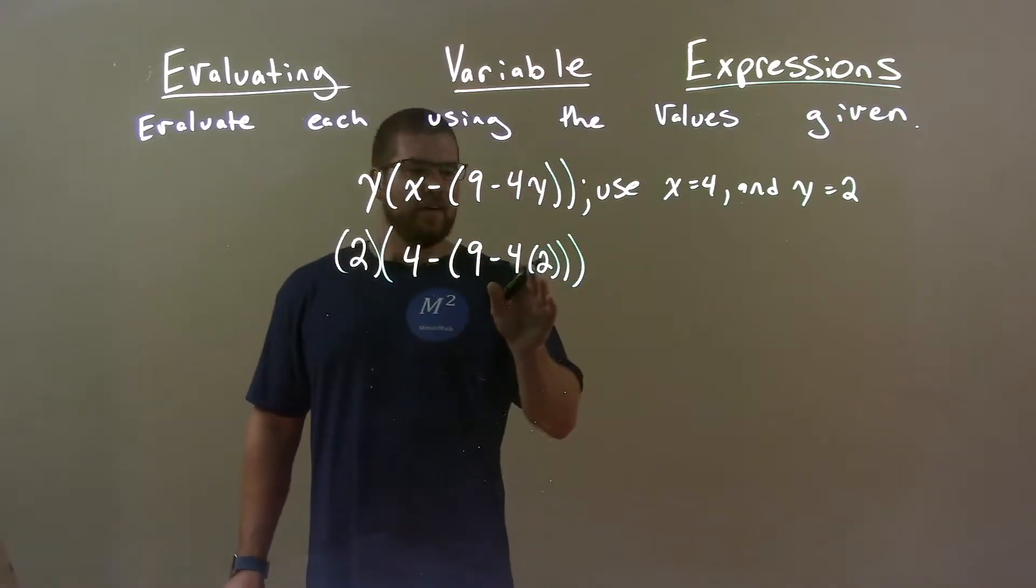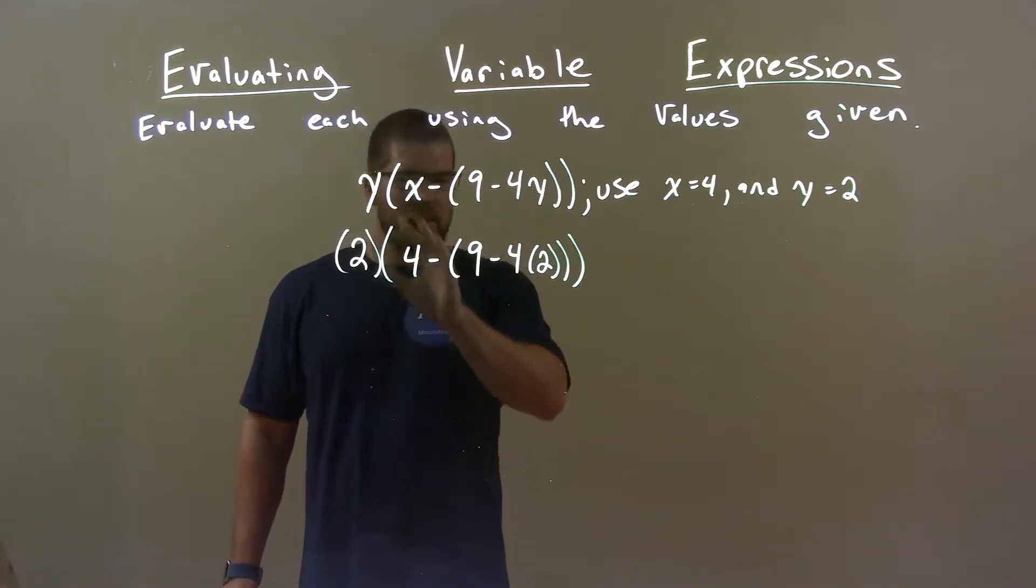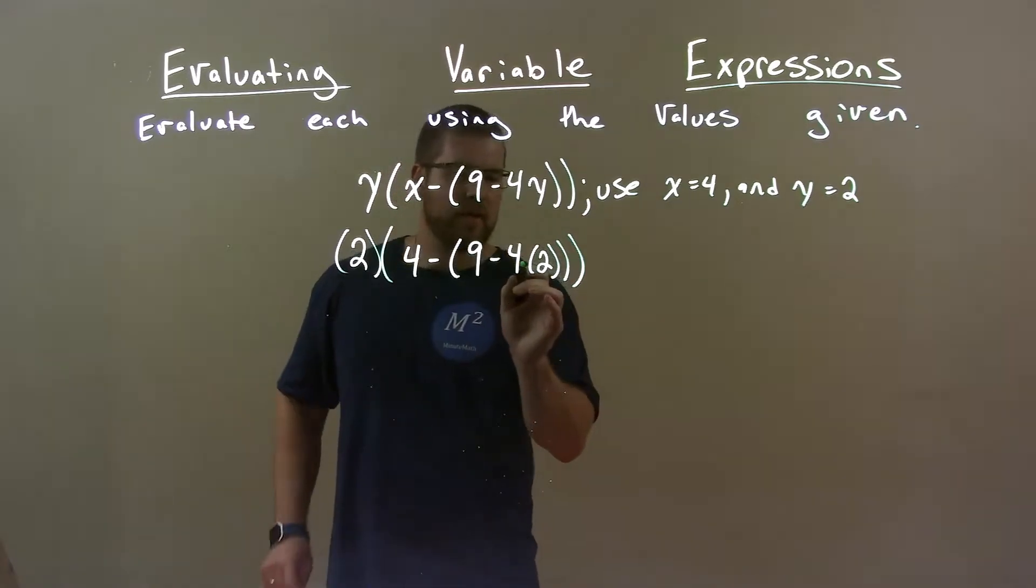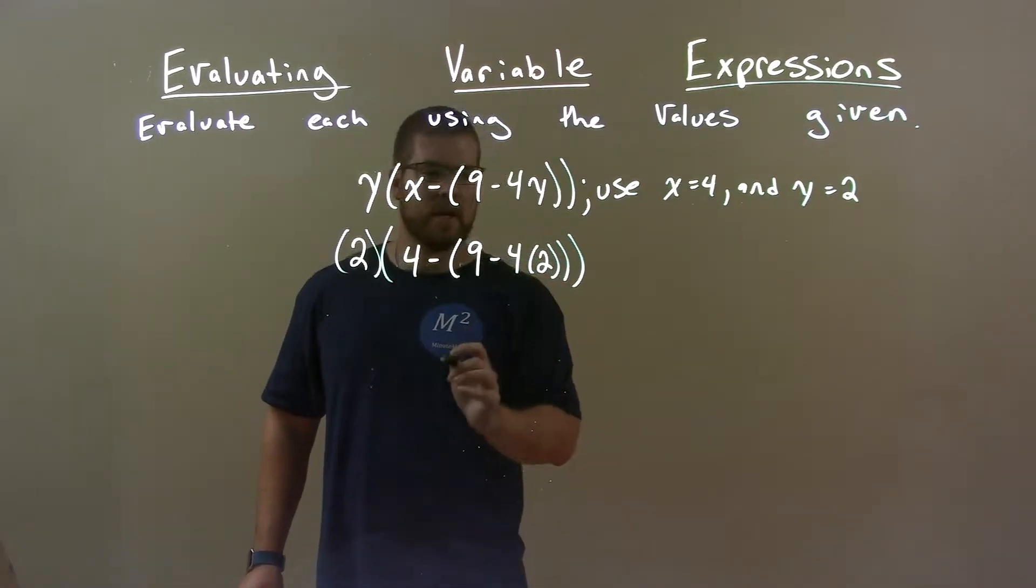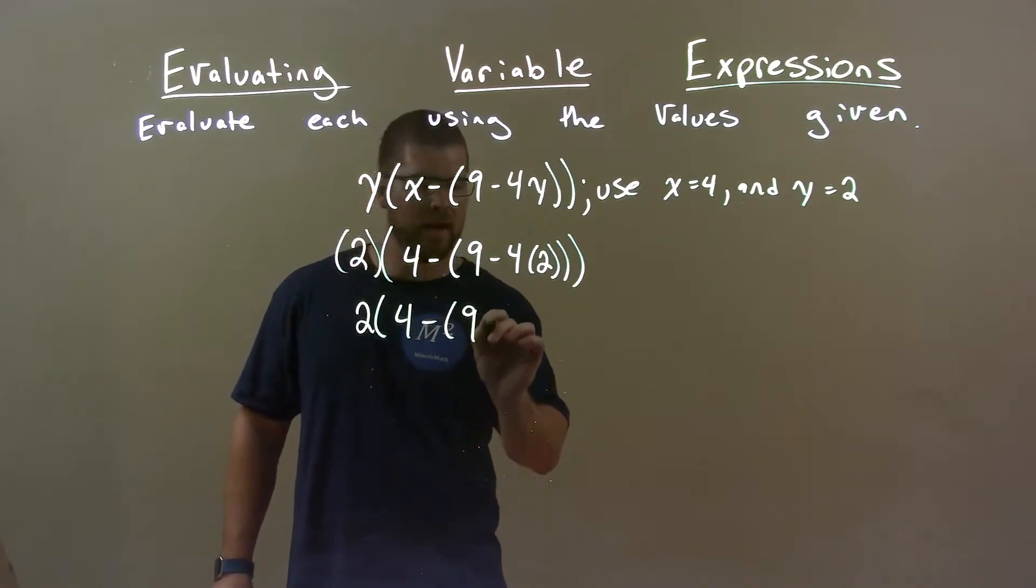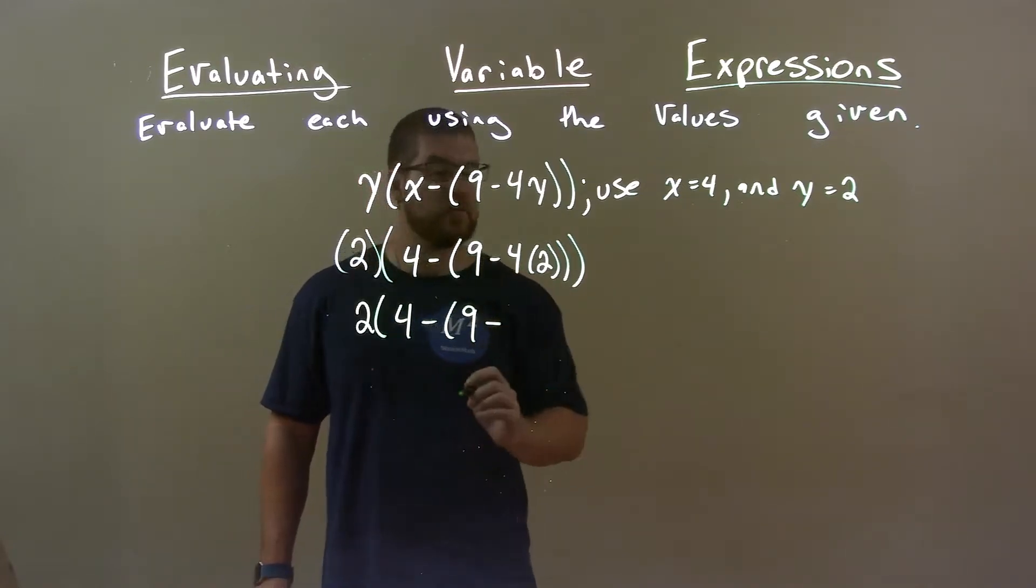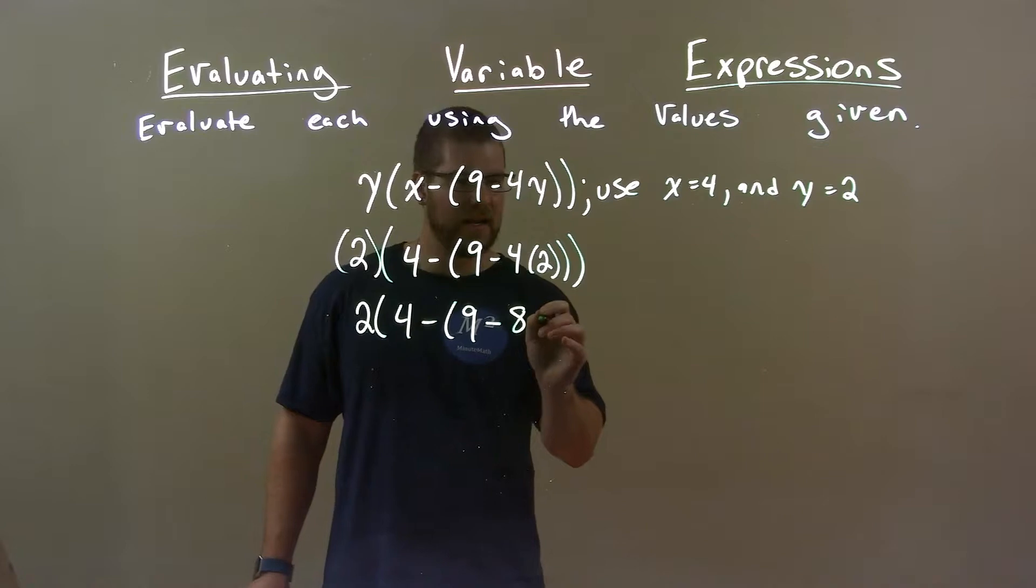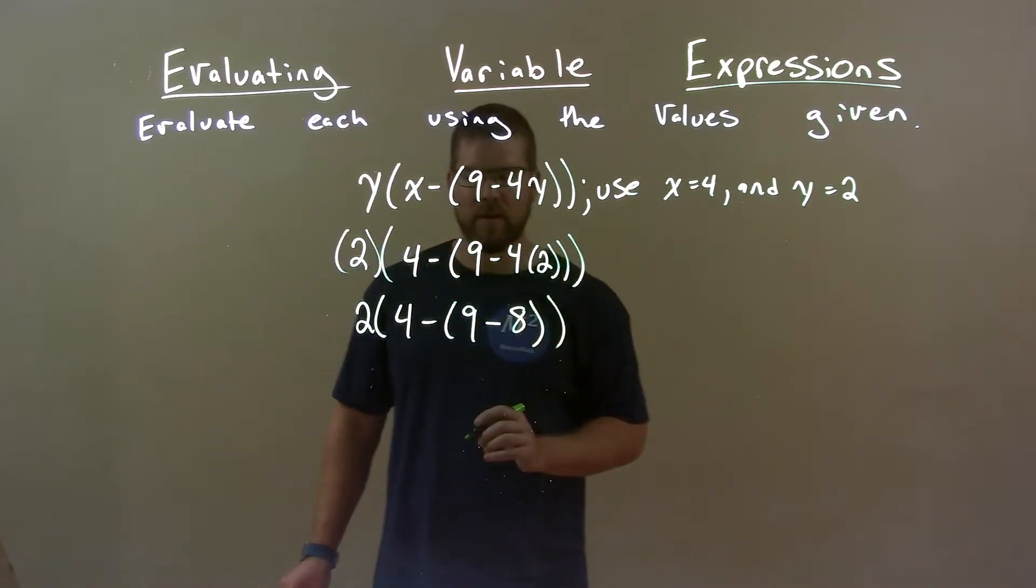So it's kind of complicated to see here, but our first step on the most inside parentheses and multiplication inside of it is 4 times 2. So 2 here, 4 minus 9 minus 4 times 2 is 8. We have 8 here.